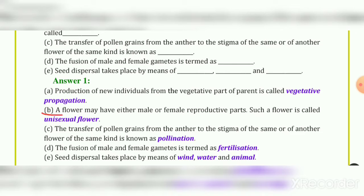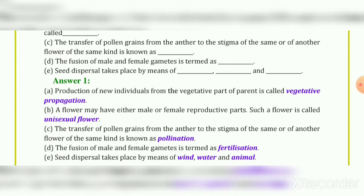B. A flower may have either male or female reproductive parts. Such a flower is called a unisexual flower. So the answer in the blank is unisexual flower.